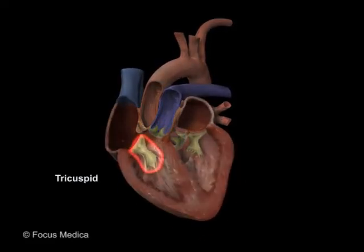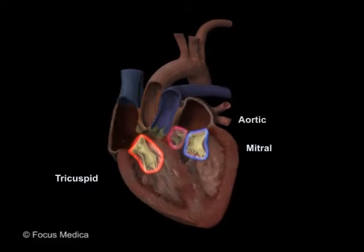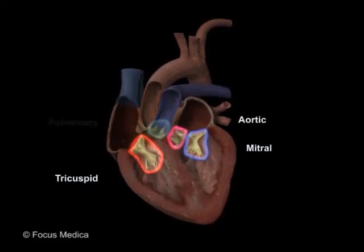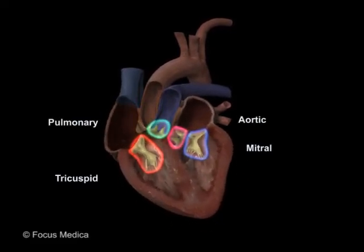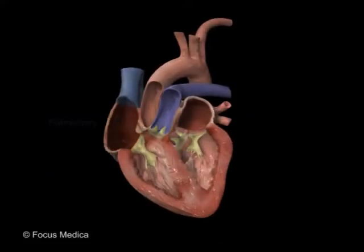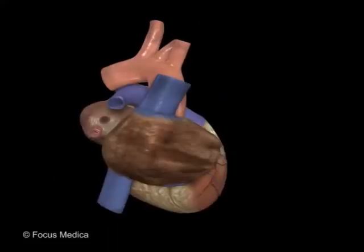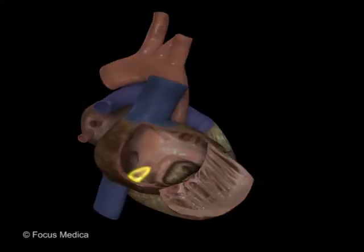The tricuspid, mitral, aortic, and pulmonary are the four major valves. The valve of the IVC and the valve of the coronary sinus are the two minor valves.